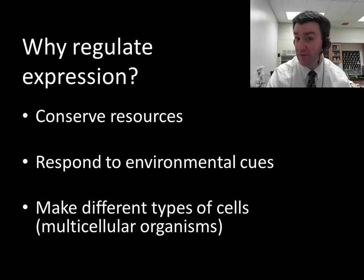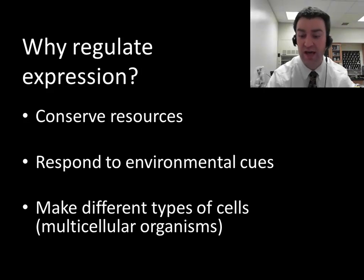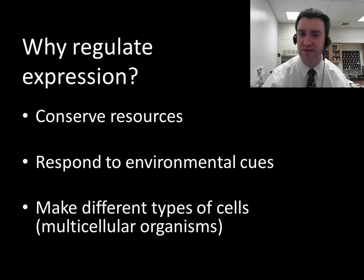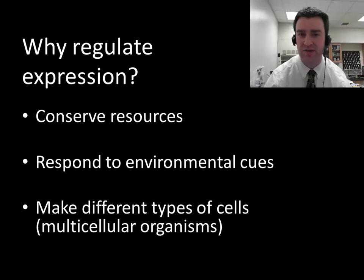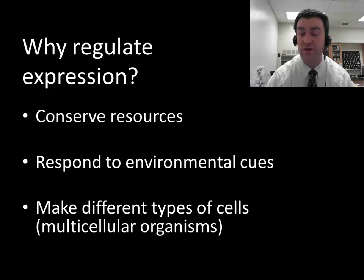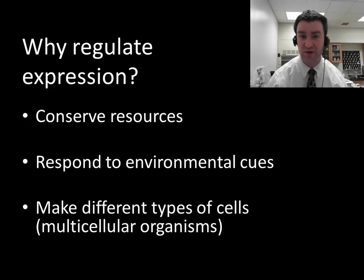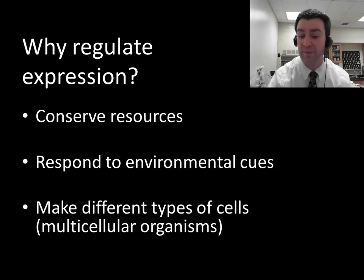So if you link signaling pathways, which we've talked about before, with gene expression, then you can have organisms capable of doing different things in different environmental situations. And finally, for multicellular organisms, which are going to be eukaryotes, regulating gene expression is important because all of a multicellular organism's somatic cells contain the same DNA code. So if you need certain cells to do specific jobs, then you're going to need to regulate expression so that certain cells express certain genes to maybe become a particular type of cell.